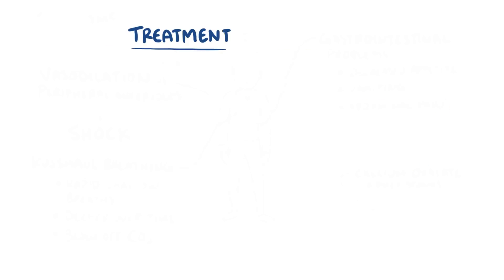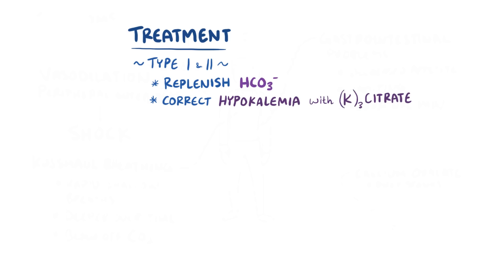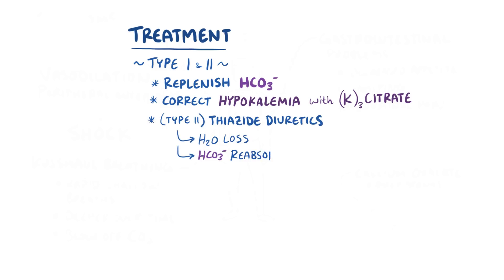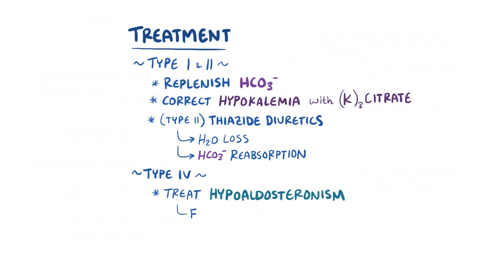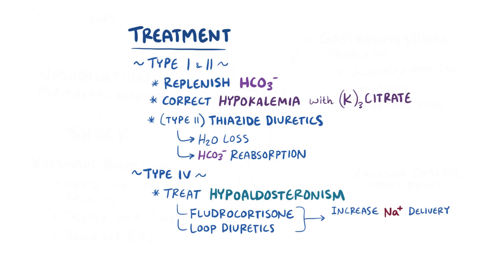For treatment, in renal tubular acidosis type I and II, the main goal is to replenish bicarbonate and correct hypokalemia with potassium citrate. In just renal tubular acidosis type II, this can be achieved with thiazide diuretics which cause water loss and increased reabsorption of bicarbonate. As for renal tubular acidosis type IV, the goal is to treat hypoaldosteronism with fludrocortisone or loop diuretics, which increases sodium delivery to the collecting duct and increases potassium-hydrogen exchange.